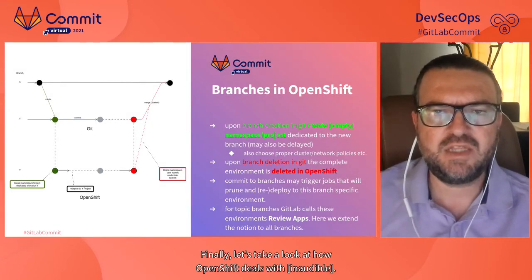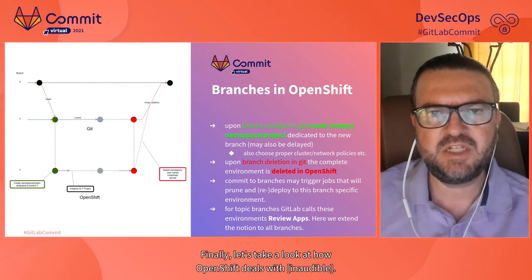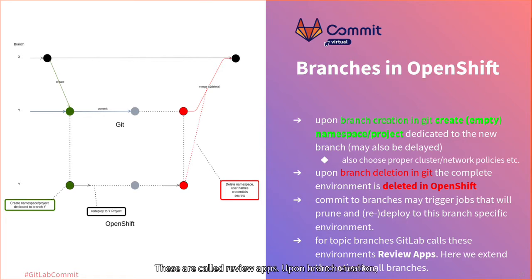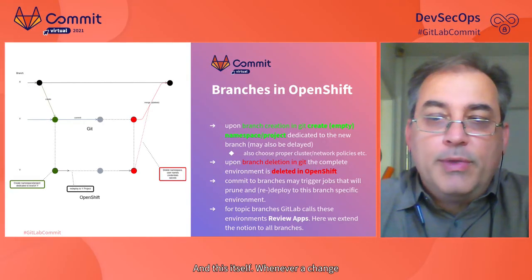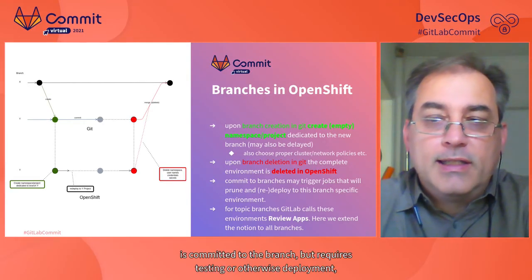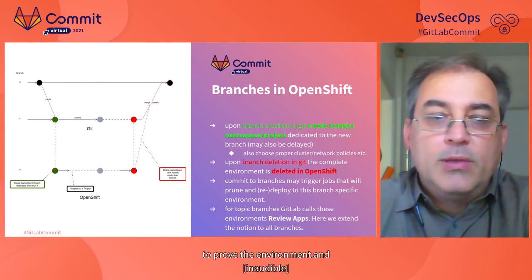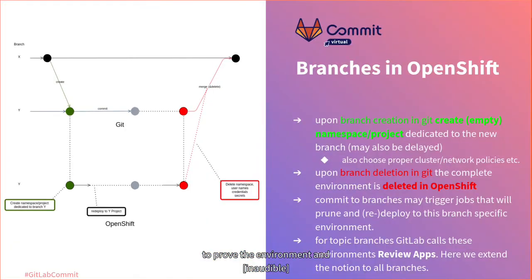Finally, let's look at how OpenShift deals with the branch paradigm. For topic branches, GitLab is already proposing and implementing a branch-specific environment called Review Apps. Upon branch creation, the pipeline identifies the proper OCP cluster to create a new project or namespace. Whenever a change is committed to the branch that requires testing or deployment, the runner uses the branch secrets to provision the environment and redeploy the application. Branch deletion is again trivial — the branch project is completely deleted.